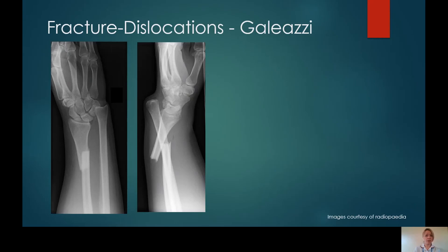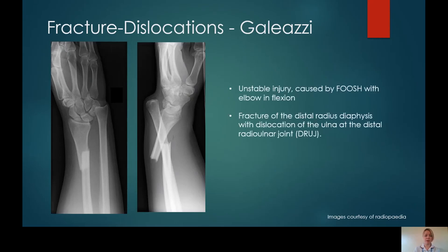Although Galeazzi injuries are definitely not part of the elbow, it feels remiss to talk about a Monteggia fracture dislocation without moving on to a Galeazzi fracture dislocation. These also are unstable injuries caused by a FOOSH with the elbow in flexion, and there is a fracture of the distal radial diaphysis with dislocation of the ulna at the distal radio-ulnar joint.